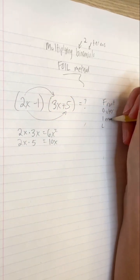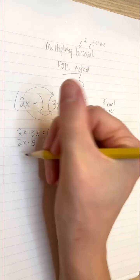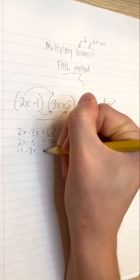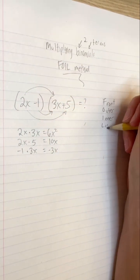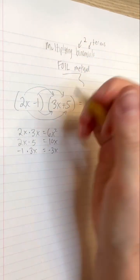I stands for inner. Negative 1 times 3x is negative 3x. And finally, L stands for last. Negative 1 times 5 is negative 5.